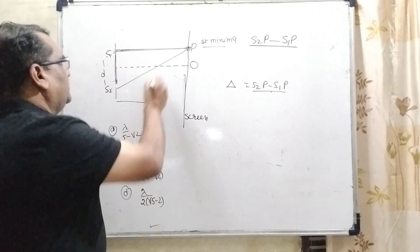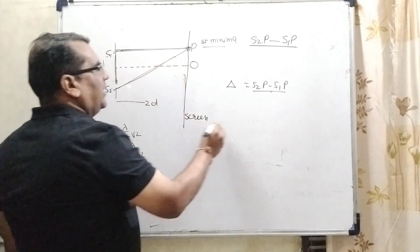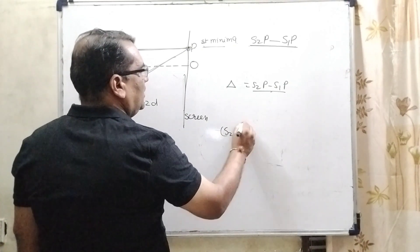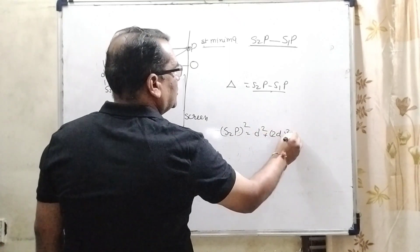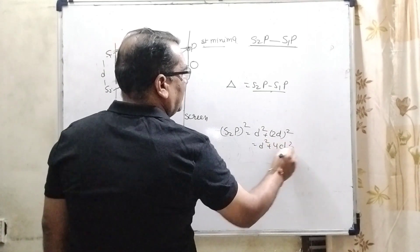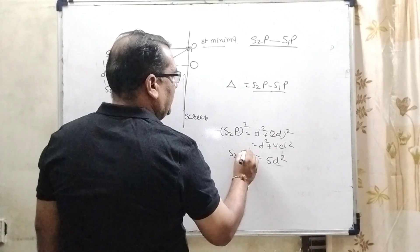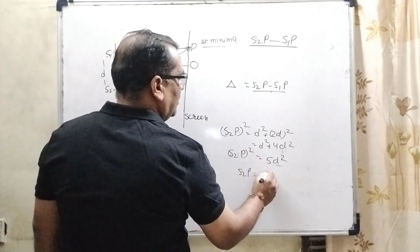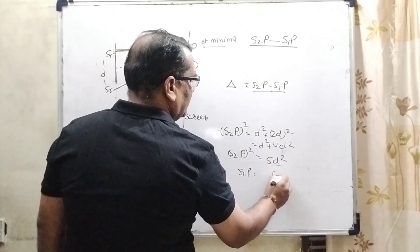Here we are using Pythagoras theorem to find out all these distances. So, S2p squared equals d square plus 2d whole square, that is d square plus 4d square, which equals 5d square. Therefore, S2p equals root 5d.